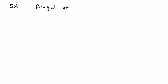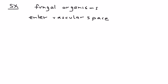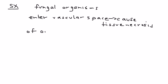In terms of symptoms in someone with Rhino-cerebral mucormycosis, these fungal organisms enter the vascular space and once they do, they can cause tissue necrosis — literally eating up all the tissue of structures such as the orbit of the eye.